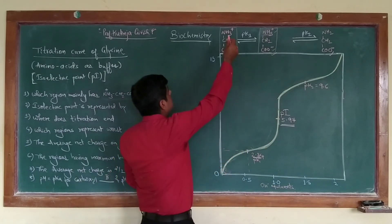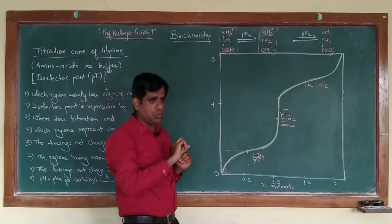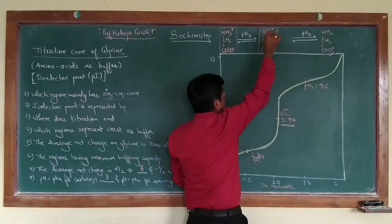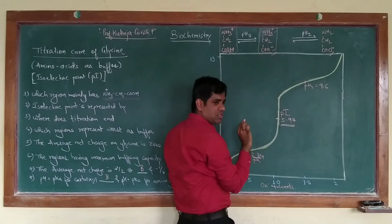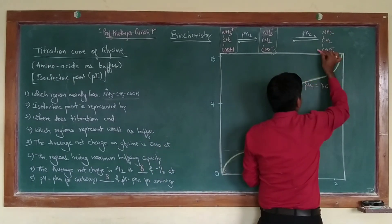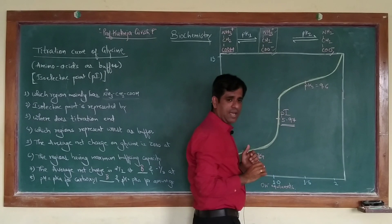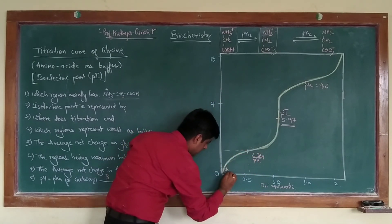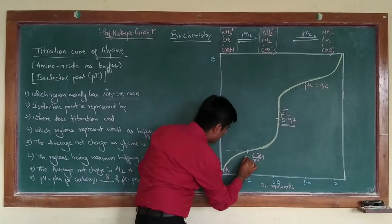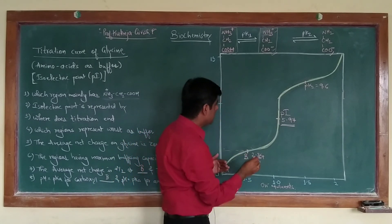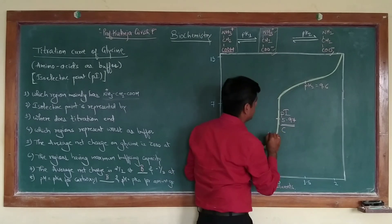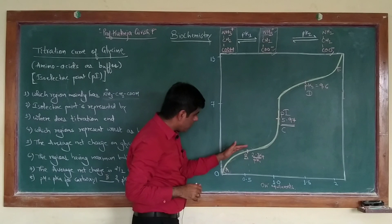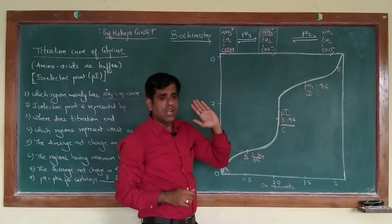The total charge on the amino acid in the fully protonated form is plus 1, in the zwitterionic form it is 0, and in the fully deprotonated form it is minus 1. You can basically divide this curve into different regions — let us call these points A, B, C, D, and E. This is how a typical titration curve proceeds.